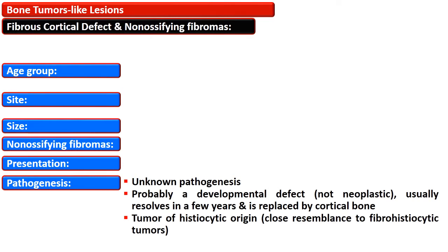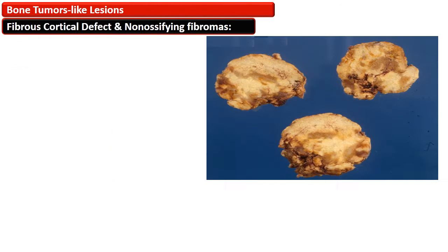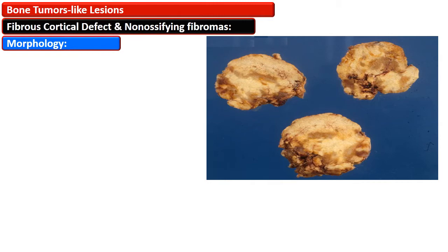The pathogenesis of this lesion is unknown and it is considered a developmental defect and a non-neoplastic condition. The condition resolves in a few years and the defect is replaced by cortical bone. Some scientists consider this lesion of histiocytic origin due to its close resemblance to fibrohistiocytic tumors. The only difference between fibrous cortical defect and non-ossifying fibroma is size. These are brown lesions with foci of yellow discoloration due to abundance of foamy histiocytes and they have a lobulated appearance.